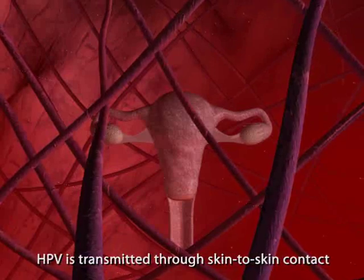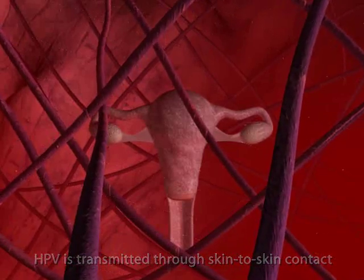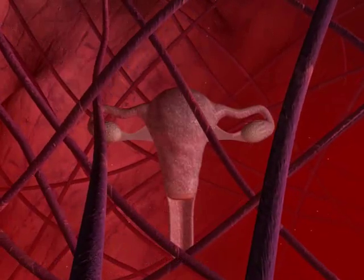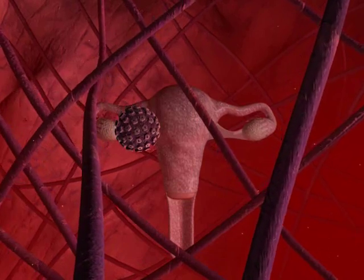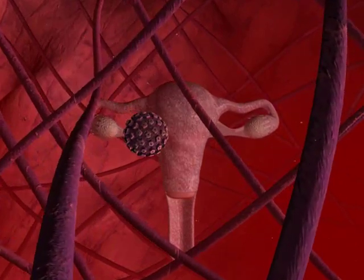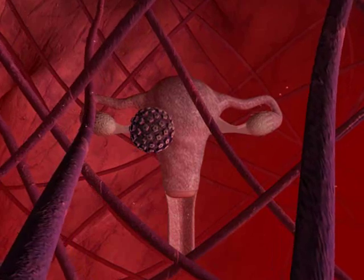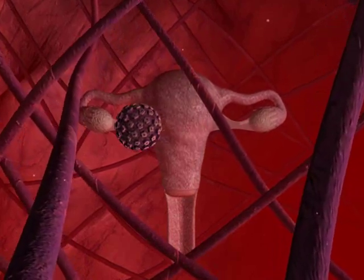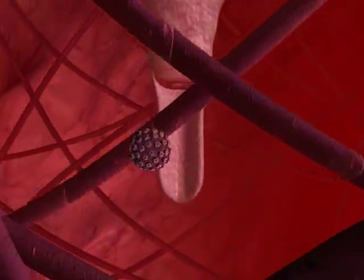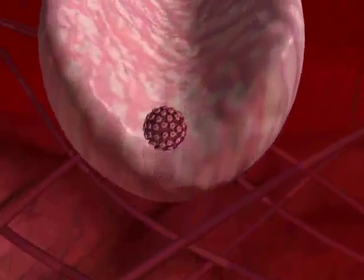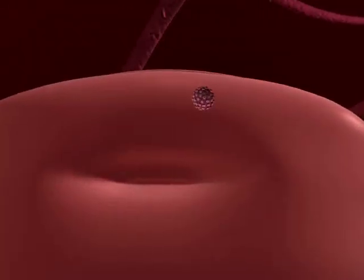HPV is transmitted through skin-to-skin contact during sexual activity and may not be prevented by the use of condoms. Through microabrasions in the epithelial layers of either the external genitalia or cervix, HPV enters and transits to the basal layer of cells, where the infection cycle begins.